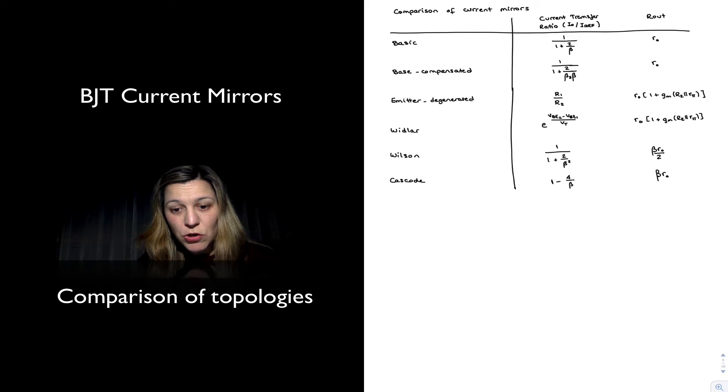We have for the basic mirror, the transfer ratio is 1 over 1 plus 2 divided by beta, and R out of little r o.